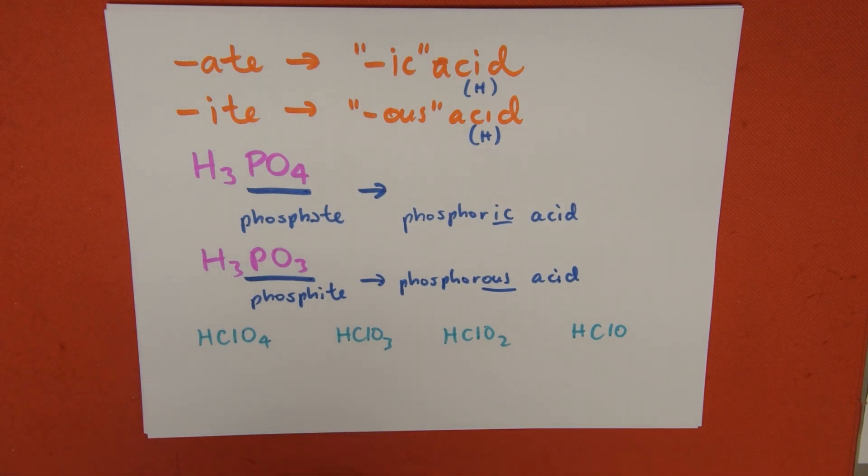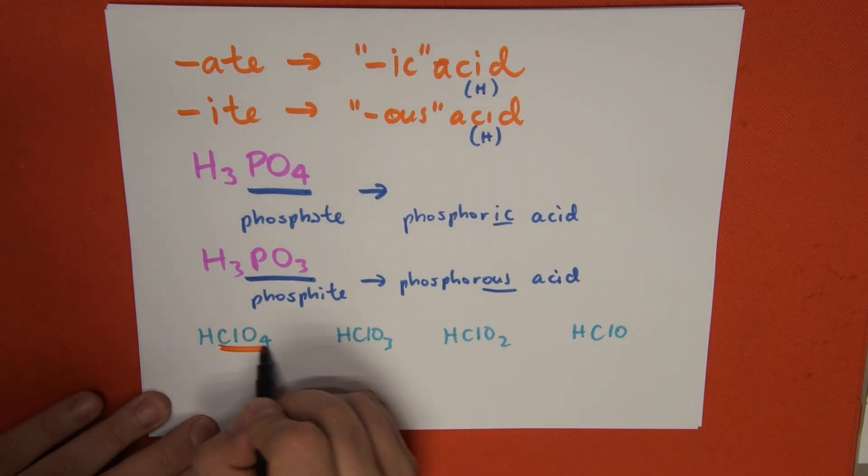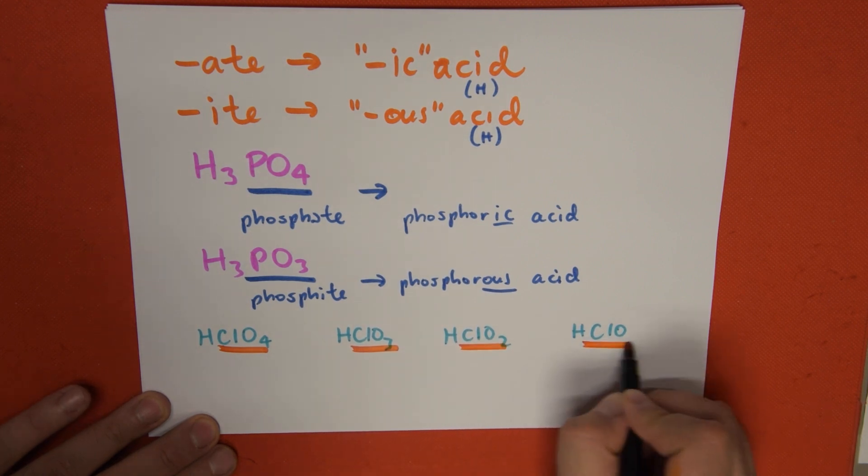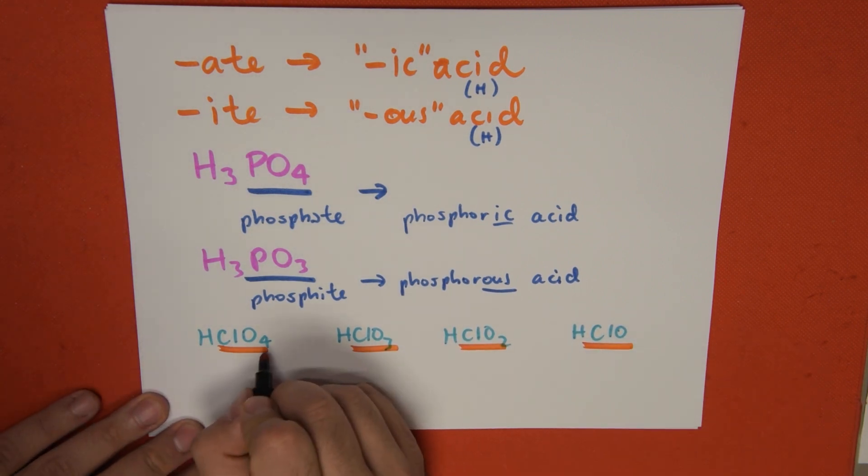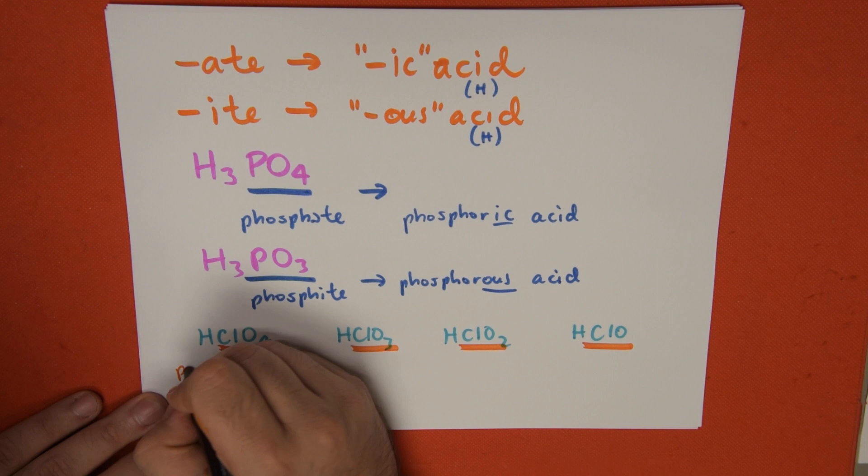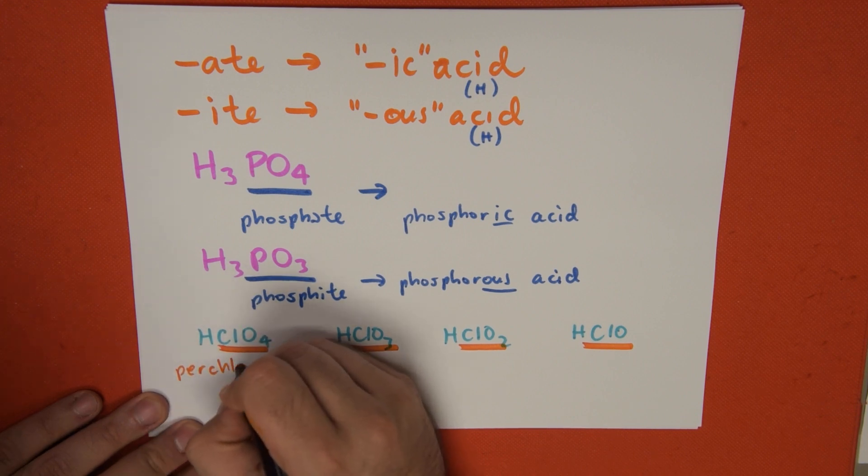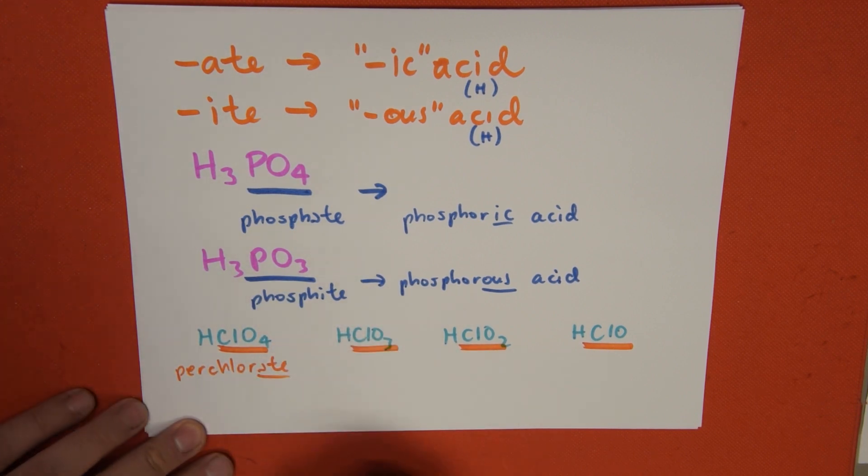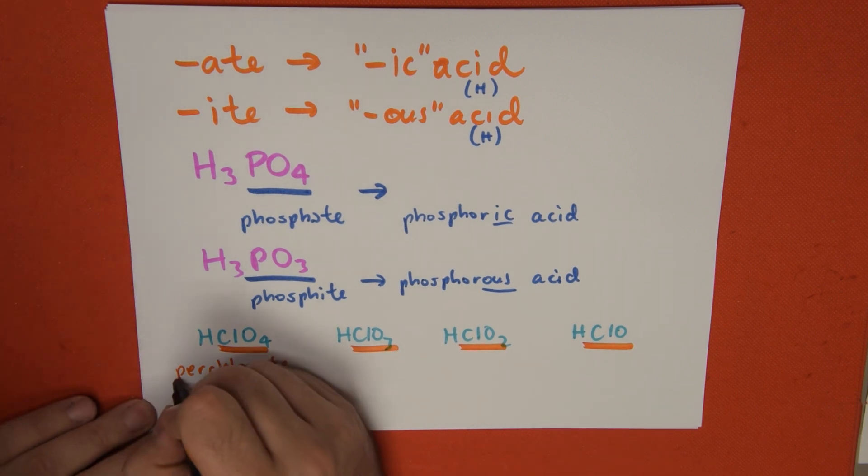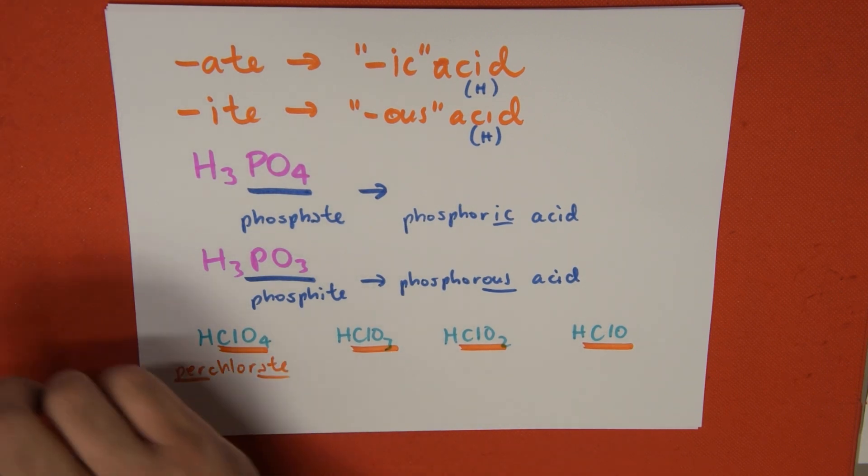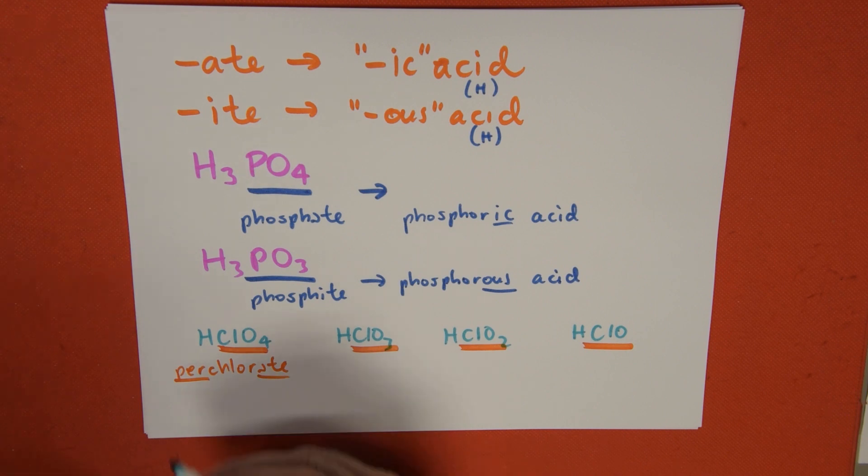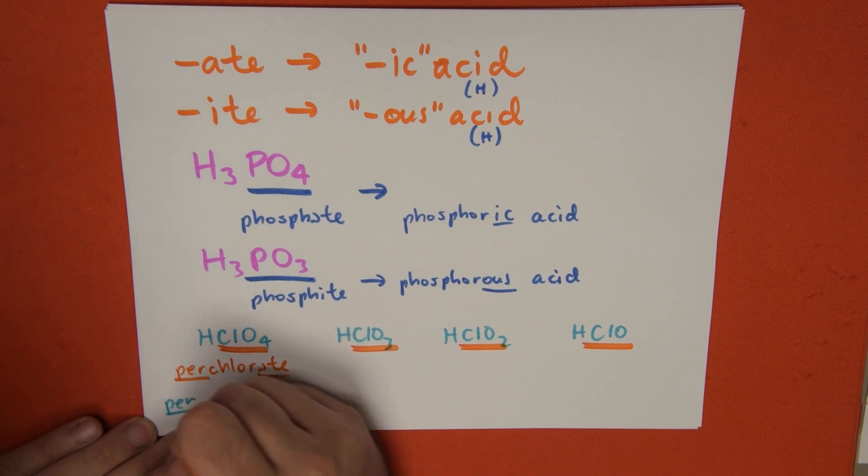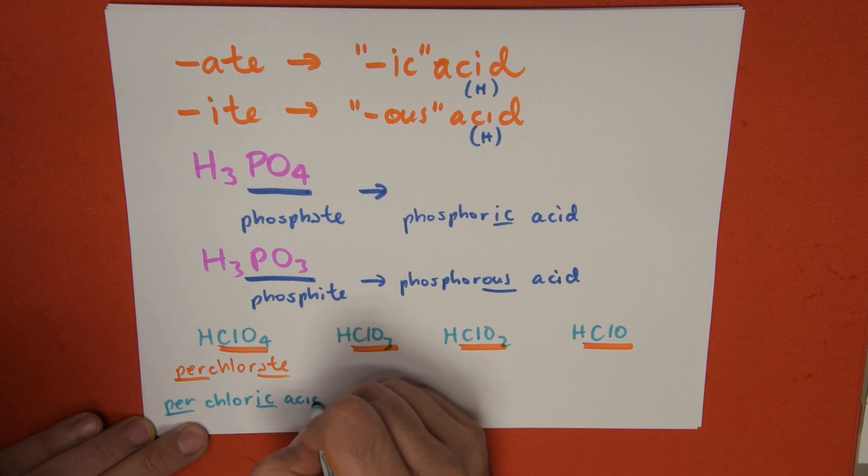We look at the original name of each of the anions, and we're going to mutate them into something else. ClO4 is called perchlorate, and we find that on our table. Since it ends in -ate, we're going to turn it into -ic, but we also need the prefix. This is going to turn into perchloric acid.